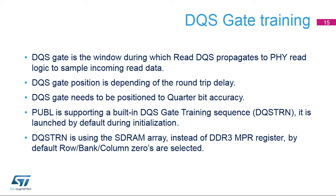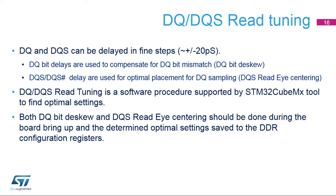DQSTRN uses the SDRAM array instead of the DDR3 MPR register. By default, row-bank-column zeros are selected. DQ and DQS can be delayed in fine steps of plus or minus 20 picoseconds. DQBit delays are used to compensate for DQBit mismatch, or DQBit dSkew. DQS-DQS# delays help optimize the placement for DQ sampling, or DQS read eye-centering. DQS read tuning is a software procedure supported by the STM32CubeMX tool to find optimal settings. Both DQBit dSkew and DQS read eye-centering should be done during board bring-up, and the optimal settings saved to the DDR configuration registers.